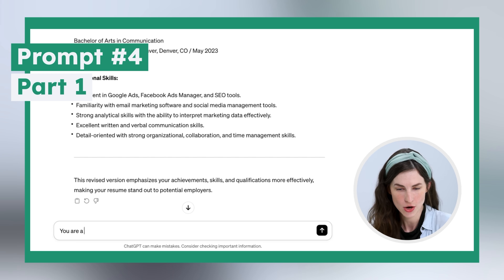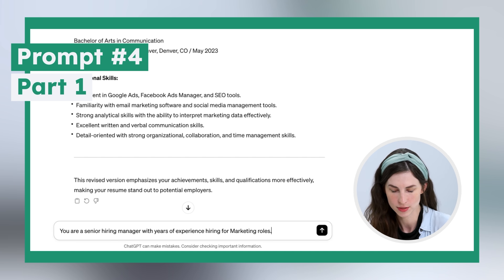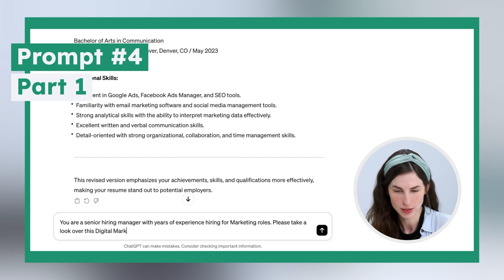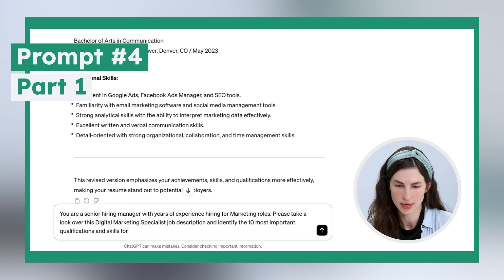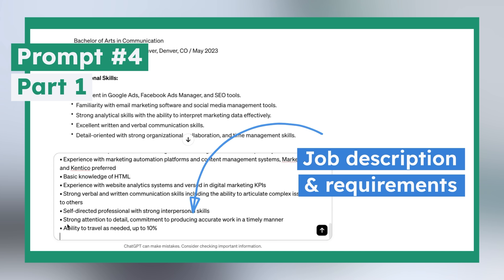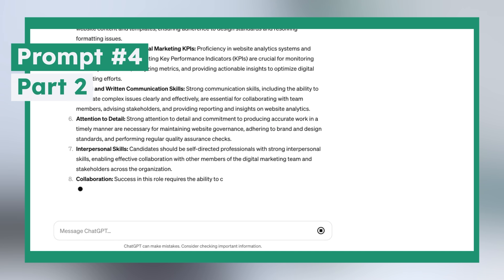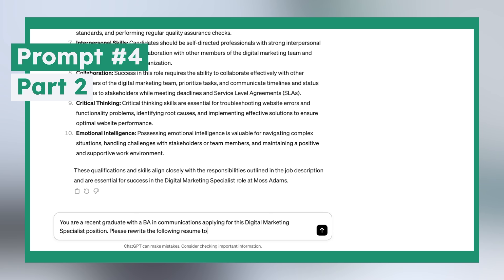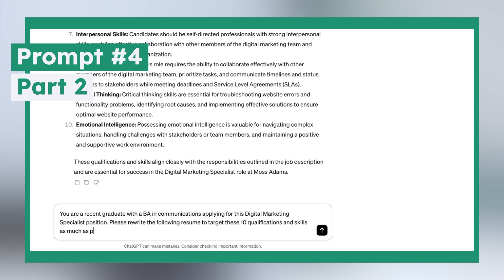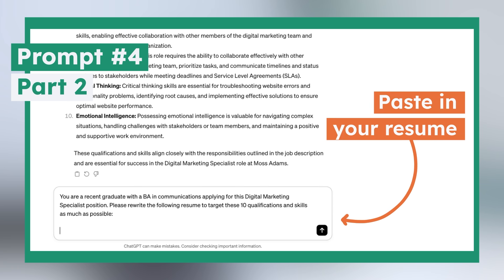You just need to make sure it's accurate. Here's prompt 4 in two parts. Part 1: 'You are a senior hiring manager with years of experience hiring for marketing roles. Please look over this digital marketing specialist job description and identify the 10 most important qualifications and skills for candidates. Here is the job listing: [paste in the job description].' Part 2: 'You are a recent graduate with a BA in communications applying for this digital marketing specialist position. Please rewrite the following resume to target these 10 qualifications and skills as much as possible.' Then paste in your resume.